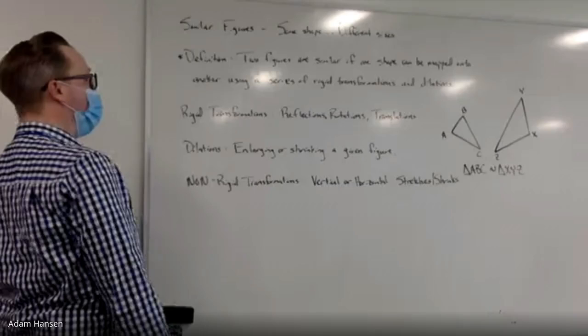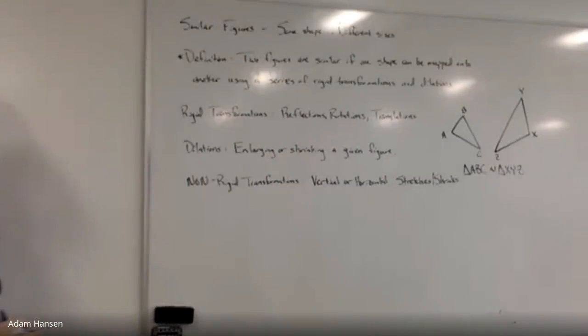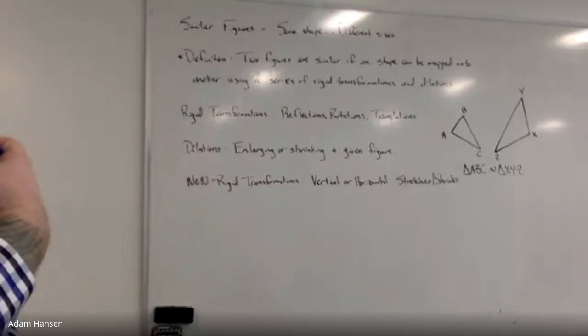So two figures are similar if it uses a sequence of rigid transformations. There are a set of three rigid transformations in geometry. The first one is reflection - you can flip something across a line. Rotate it - I can turn it about a point. I can rotate it some number of degrees about a given point.